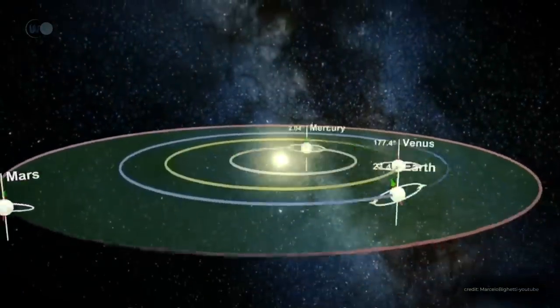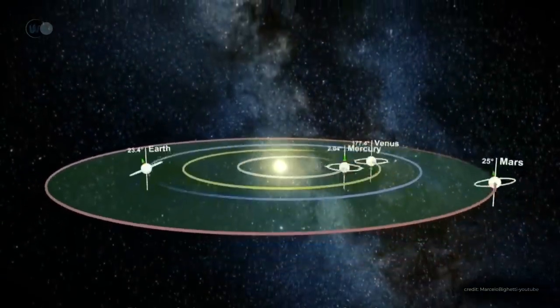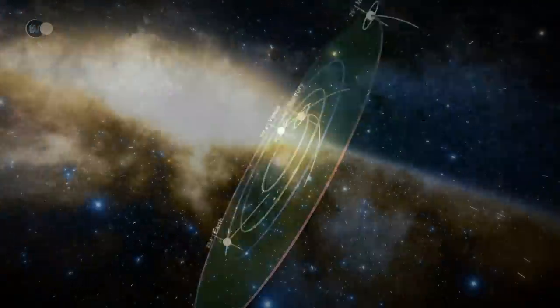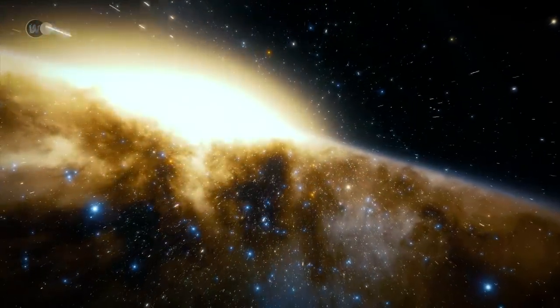This inclination also applies to the planets orbiting the Sun. Consequently, if we observe the Sun and the plane in which all solar system objects orbit it, they are all tilted forward by 60 degrees as they travel through the Milky Way.